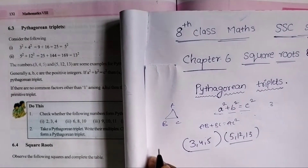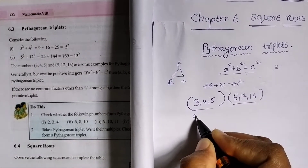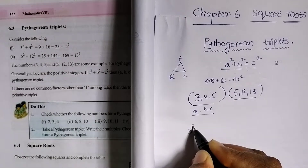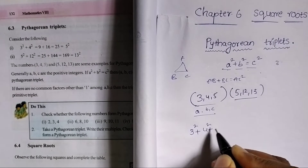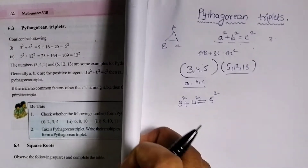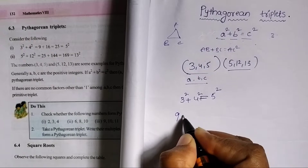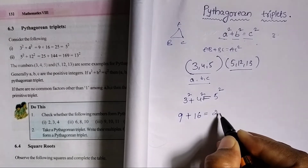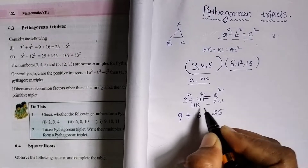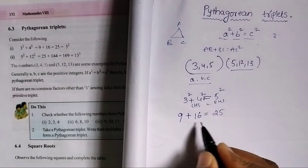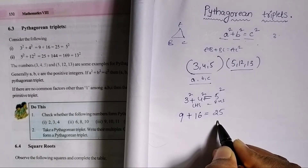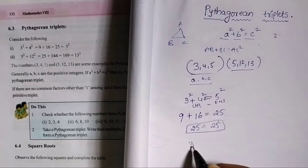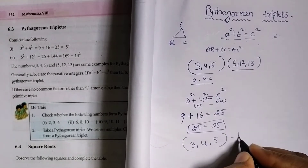Okay, here it is 3, 4, 5 — that is A, B, C. A square means 3 square plus B square means 4 square is equals to C square means 5 square. So 3 into 3 is 9, plus 4 into 4 is 16, equals 5 square means 25. LHS is equal to RHS. So 9 plus 16 equals 25, and these numbers 3, 4, and 5 are Pythagorean triplets.